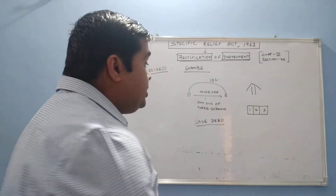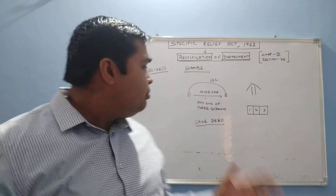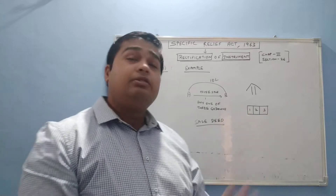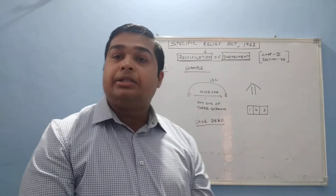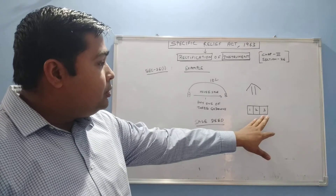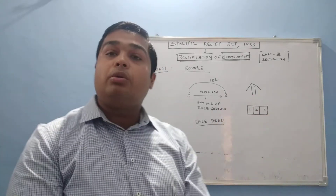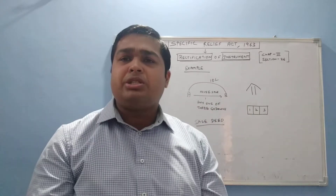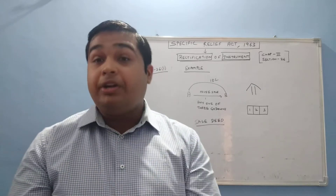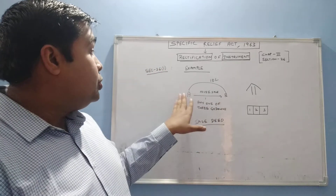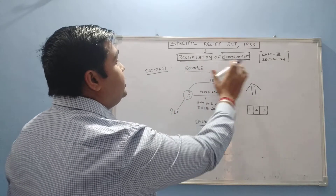After a few days, B takes possession of the house and the first godown. A then says that he intended to give B the third godown. B said: no, that was not the case — in the sale deed, it was written that he would get one godown, and that was the first godown. A insisted he had intended to give the third godown. A conflict was created, and A became the plaintiff, filing for rectification of the instrument.